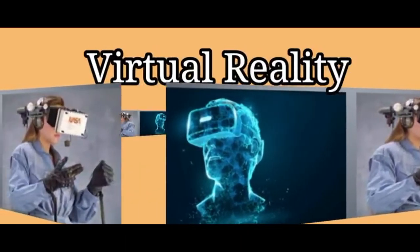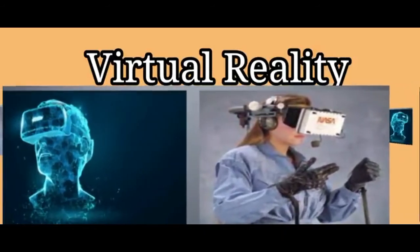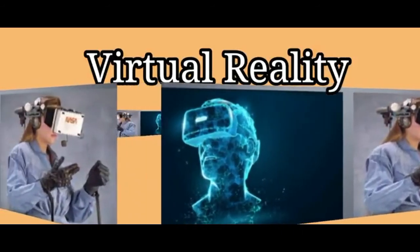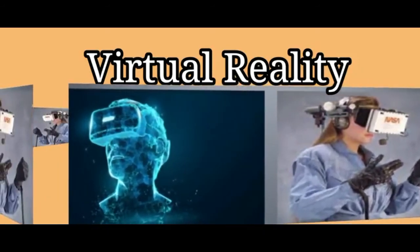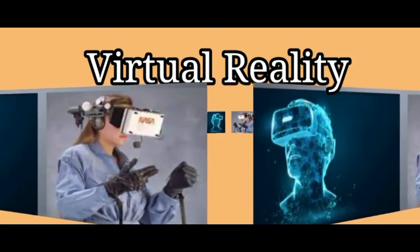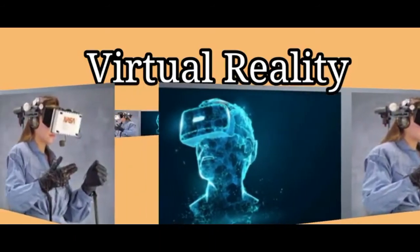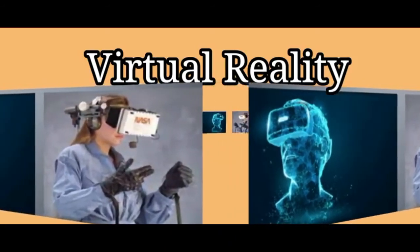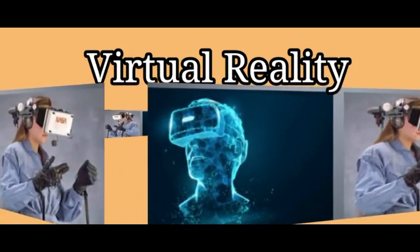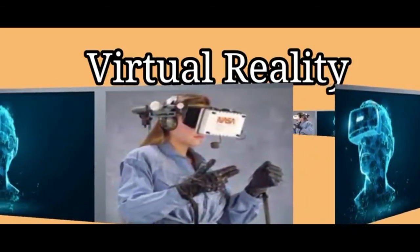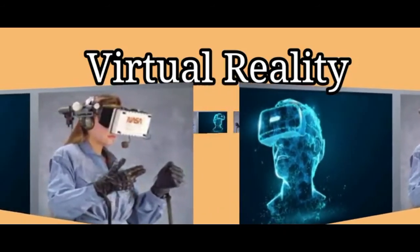Virtual Reality. Virtual Reality is an artificial environment created with computer hardware and software and presented to the user in such a way that it appears and feels like a real environment. To enter a virtual reality, a user has to wear special gloves, earphones and goggles, all of which receive their input from the computer system. In this way, at least three of the five senses are controlled by the computer.